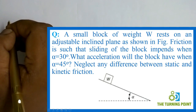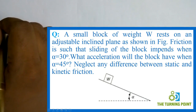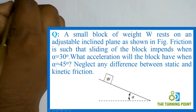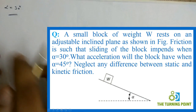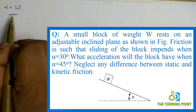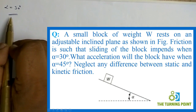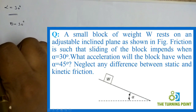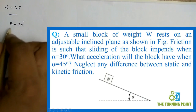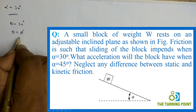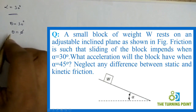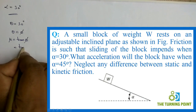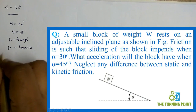A small block of weight W rests on an adjustable inclined plane. Friction is such that sliding of the block impends when alpha equals 30 degrees. This is the angle of repose, denoted theta, which equals 30 degrees. The relation between angle of repose and angle of friction phi gives us mu equals tan phi, which is tan 30 degrees — so the coefficient of friction is indirectly given.